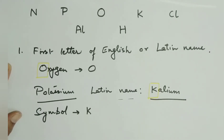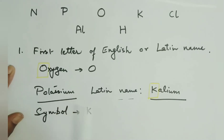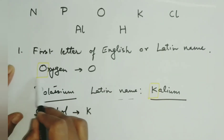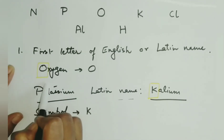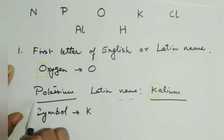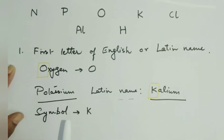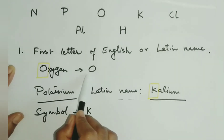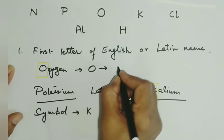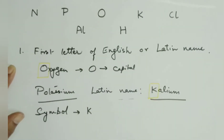Now let us try and see how elements got their symbols. The first method which scientists used to obtain the symbols of elements was to take the first letter of the names of elements as its symbol. It can be an English name or it can be a Latin name. In case of oxygen, oxygen is an English name of an element and its first letter is O, so O was taken as the symbol of oxygen. Whenever we take the first letter as a symbol, we always write it in capital letters.